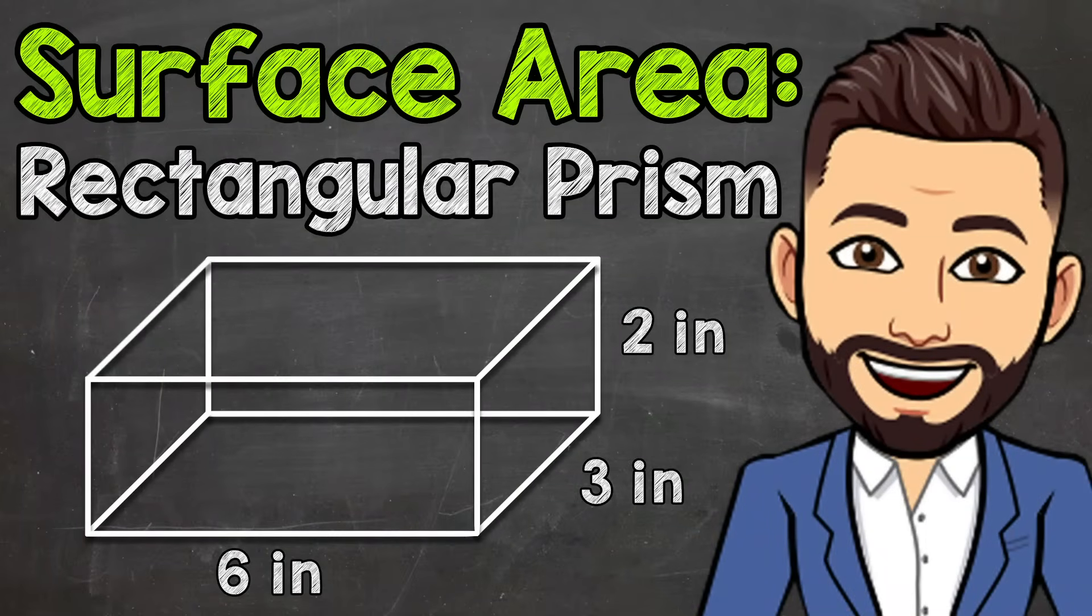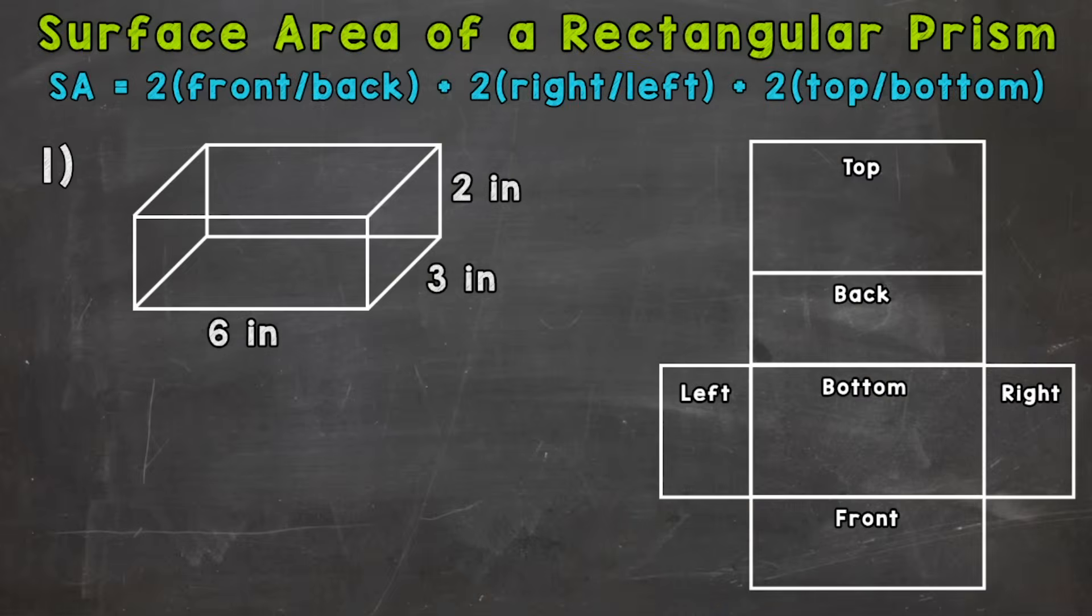Welcome to Math with Mr. J. In this video, I'm going to cover how to find the surface area of a rectangular prism. And remember, when it comes to surface area, simply put, it's the total area of the outside part or layer of a 3D figure.